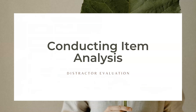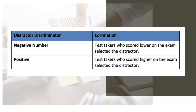As we talk more about conducting item analysis, let's clarify key components associated with the distractor. If the PBI is a negative number, test takers who scored lower on the exam selected the distractor — and that's what we want, because it indicates those students aren't knowledgeable about that content area. If the distractor PBI is positive, then test takers who scored higher on the exam actually selected the distractor — not a good indication that learning has happened.